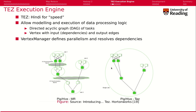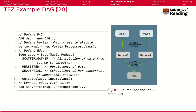After we have defined such a computation as a graph, we can then bring it together as a job, and TESS partitions these jobs and runs them autonomously on our YARN environment. There is a so-called vertex miniature component that defines the parallelism and resolves dependencies. An example DAG is shown here in this graphic.